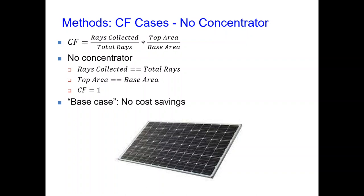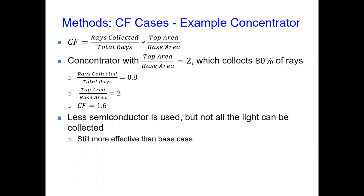For the case of using no concentrator — essentially a flat solar panel — the number of rays collected will always equal the total rays, resulting in a ray collection ratio of 1. Additionally, the top area and the base area are the same, so the concentration factor will be 1. As an example with a concentrator: if the top area is twice as large as the base area but it only collects 80% of the incoming light, multiplying these two numbers yields a CF of 1.6. This means that for a constant amount of semiconductor, using this concentrator will result in 1.6 times more light collected than not using any concentrator.